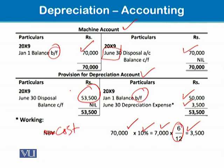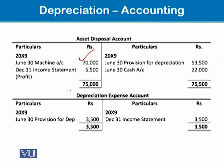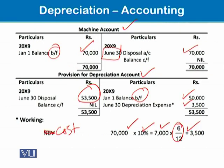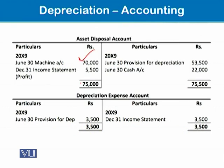The total accumulated depreciation of $53,500 is taken to the asset disposal account. In the debit side of the asset disposal account we can see the cost of the asset. In the credit side of the asset disposal account we can see the accumulated depreciation up to the date of disposal and the sales proceeds.